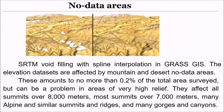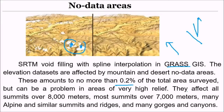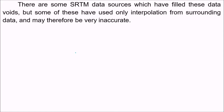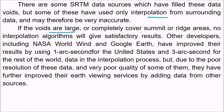What about no-data areas? SRTM has voids — void filling can be done with spline interpolation using software such as GRASS GIS. The elevation dataset is affected by mountain and desert no-data areas, amounting to no more than 0.2 percent of the total surveyed area, but this can be a problem in high-relief areas where a proper radar imaging response cannot be obtained. Voids affect summits over 8000 meters, most summits over 7000 meters, many alpine and similar summits and ridges, and many gorges and canyons. Some SRTM data sources have filled these voids using interpolation from surrounding data, but if voids are large or completely cover summit or ridge areas, no interpolation algorithm will give a satisfactory result.